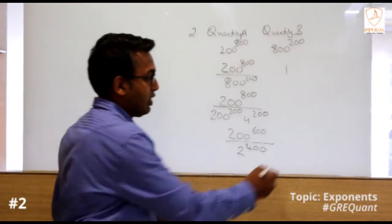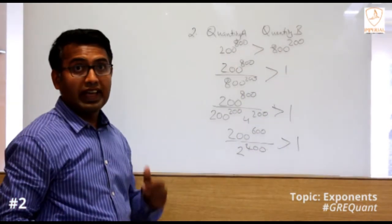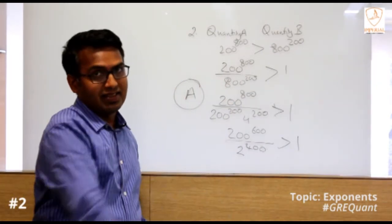So this quantity is bigger, and therefore A is greater than B. So A is the answer.